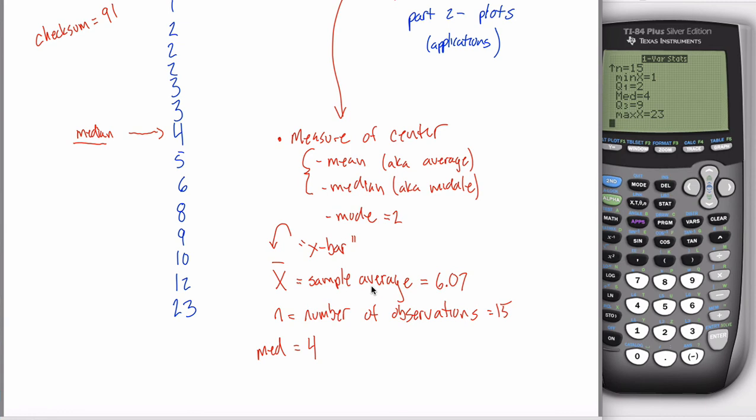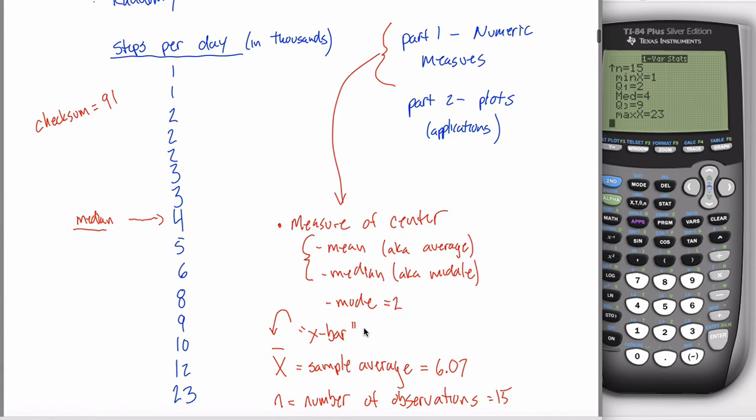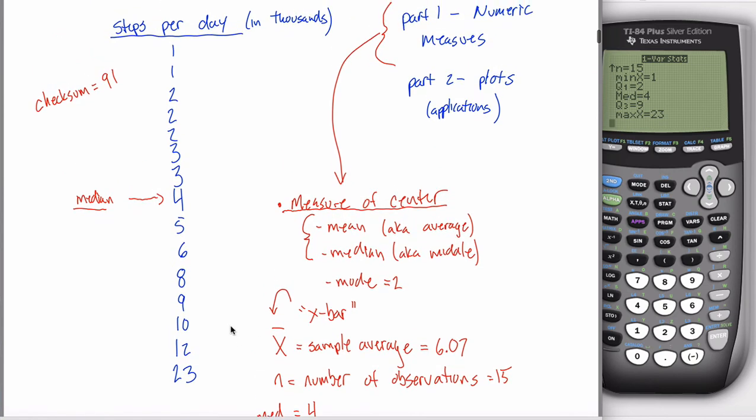The last comment I want to make before I end this video is note that 6.07 is not the same as four. The sample average and the median are different. And I guess both of those are different than the mode, which was just two. So you might wonder, which one of these is the measure of center? Well, they're all different measures of center. In this class, we'll focus on the mean and the median, the four and the 6.07. And in a couple of sections, once we learn a little bit more about data, we'll understand why we have these two different measures and why you might prefer one to the other. In fact, I'm going to hit on that a tiny bit now before I end this video.